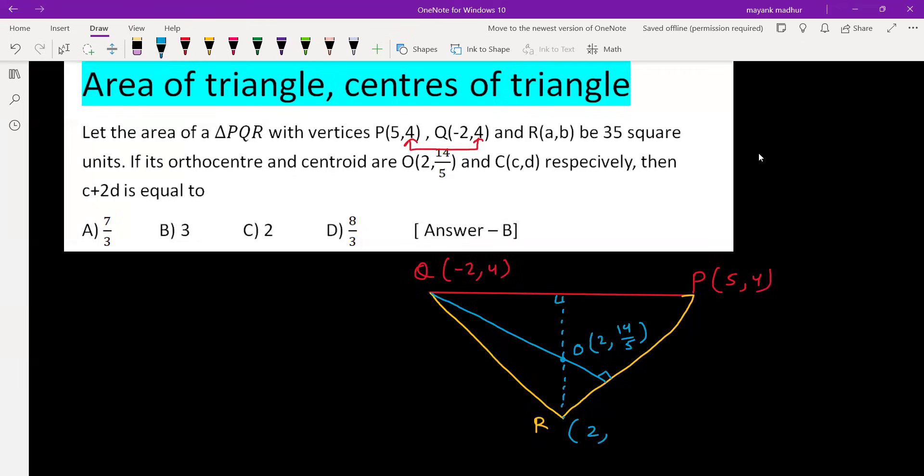We can imagine the y-coordinate as beta. Now we can use slope of PR multiplied by slope of OQ equated to negative one, because the product of slopes of two perpendicular lines is negative one. Slope of PR is y2 minus y1 by x2 minus x1.